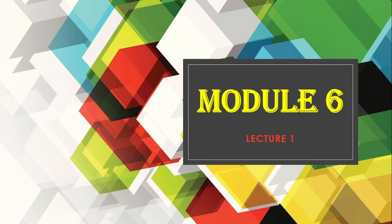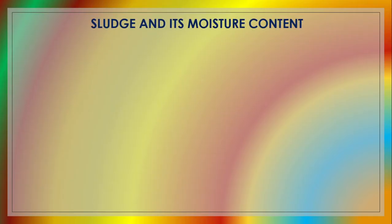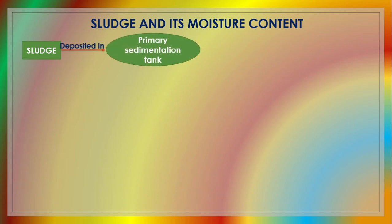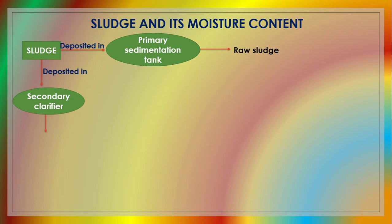This is lecture 1 of module 6: sludge and its moisture content. The sludge which is deposited in a primary sedimentation tank is called raw sludge, and the sludge which is deposited in a secondary clarifier is called secondary sludge.